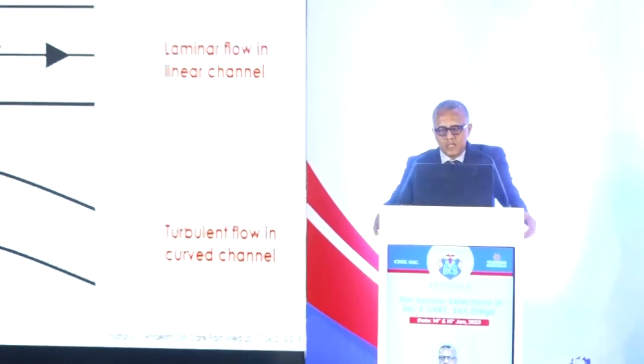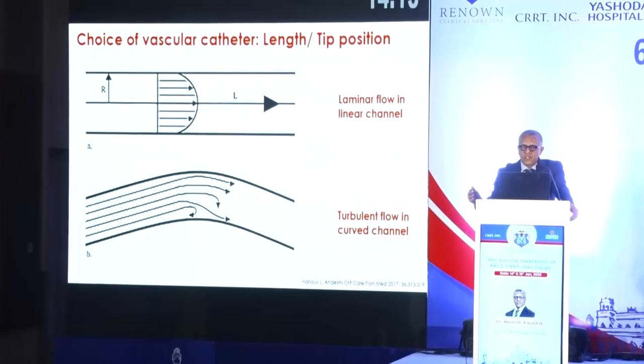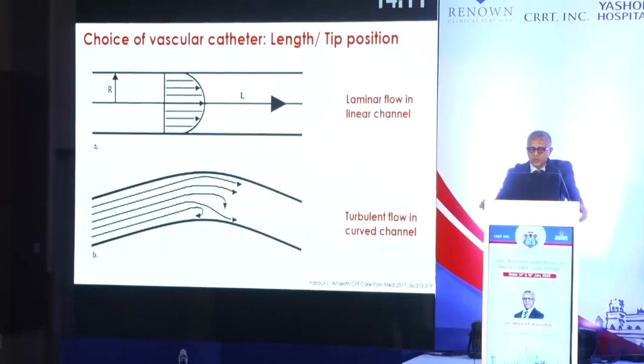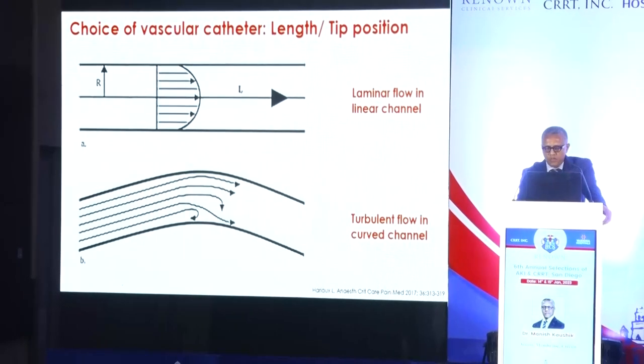Another consideration, if we think of blood as a Newtonian fluid, is that fluids in a linear channel demonstrate laminar flow. However, if the path is curved or encounters a bend, flow becomes turbulent and decreases. Therefore, how the catheter traverses through the tissues to reach the target site may have a bearing on flow velocity.